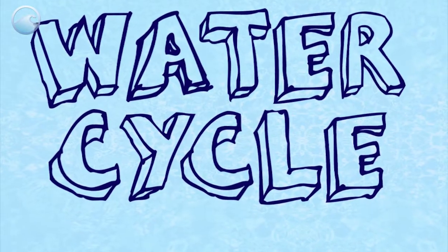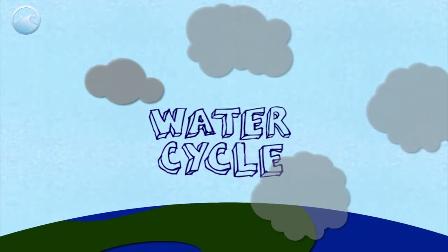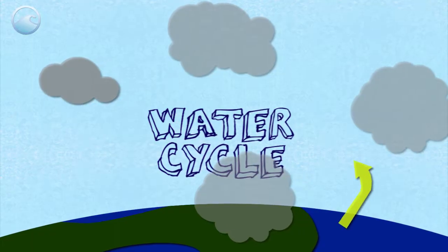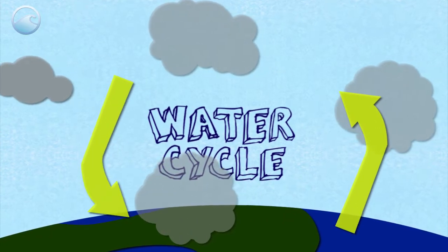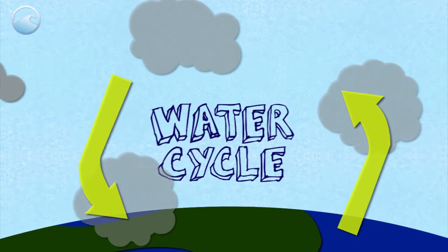At its most basic, the water cycle is how water continuously moves from the ground to the atmosphere and back again. As it moves through this cycle, it changes forms.